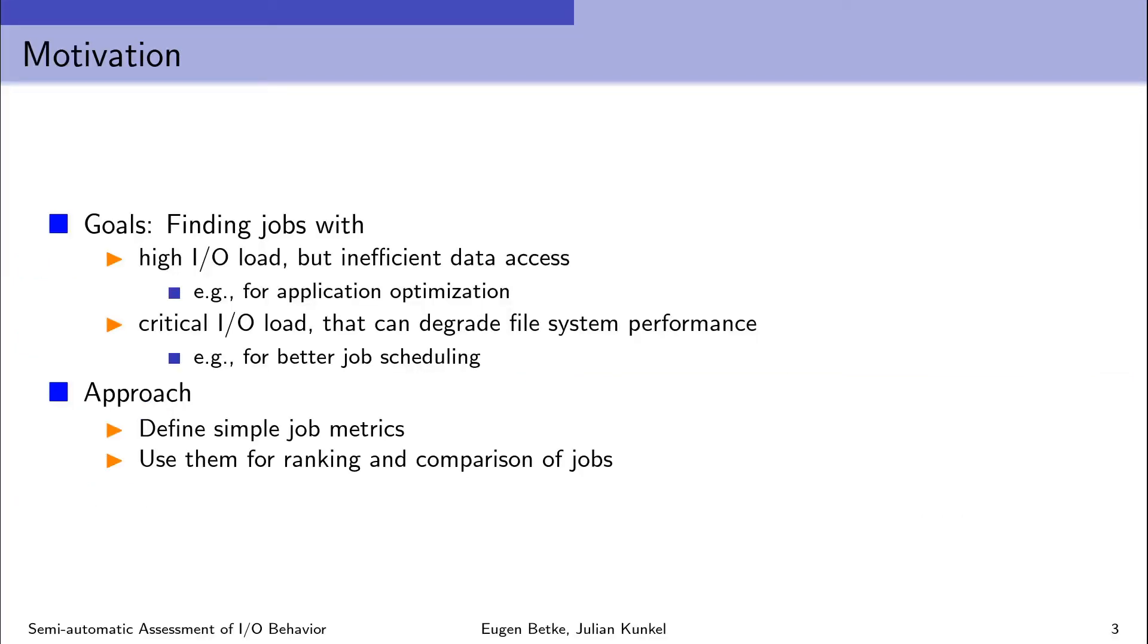One of the reasons for the project was a high interest in what kinds of jobs are running daily on our system. We are talking about 10,000 jobs a day. Surely you understand that a manual analysis of this number of jobs is not feasible. Among them are many good jobs that are using our machine efficiently. These jobs are not of interest. What we want to find are jobs which are wasting a lot of storage resources and can potentially degrade the file system performance. In this presentation I want to introduce a workflow which is able to identify these jobs. Basically it consists of two steps. In the first step we define job metrics and in the second step we use them for ranking and comparison of jobs.